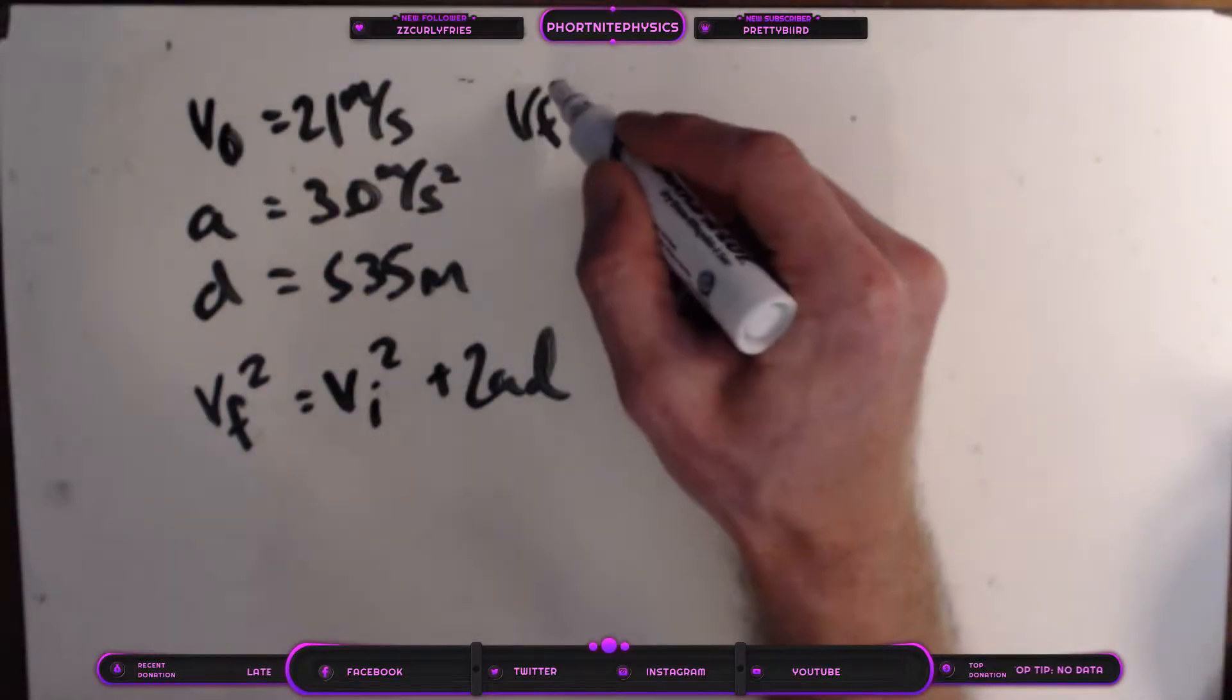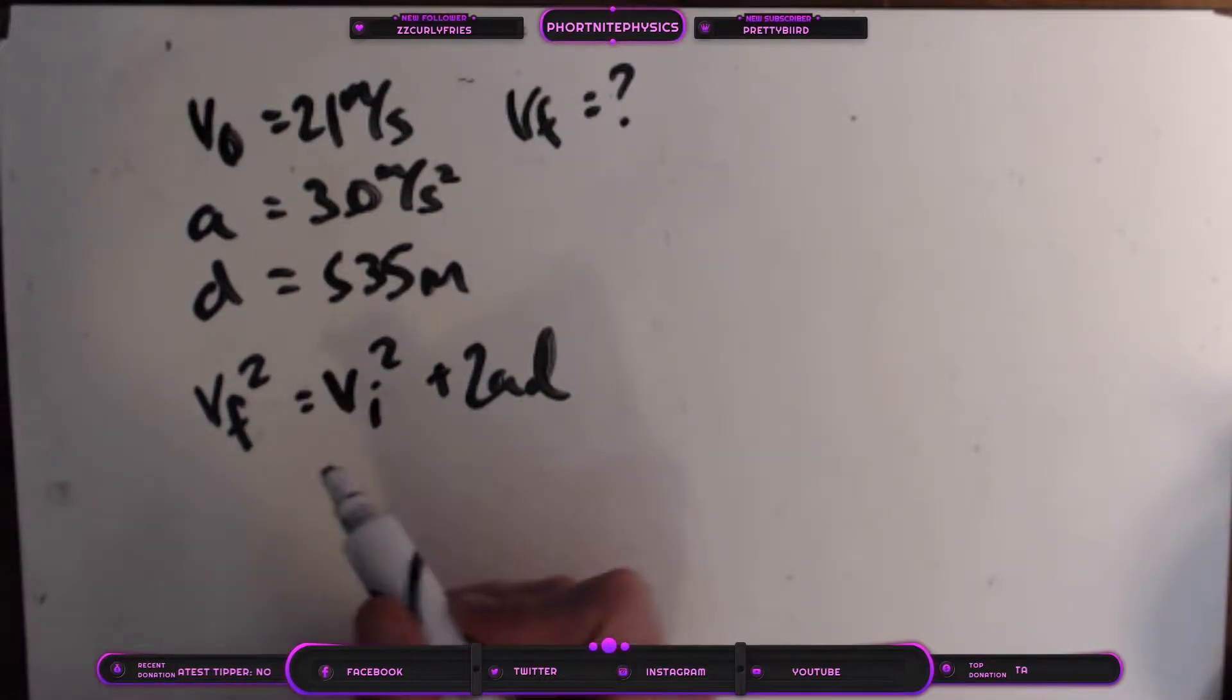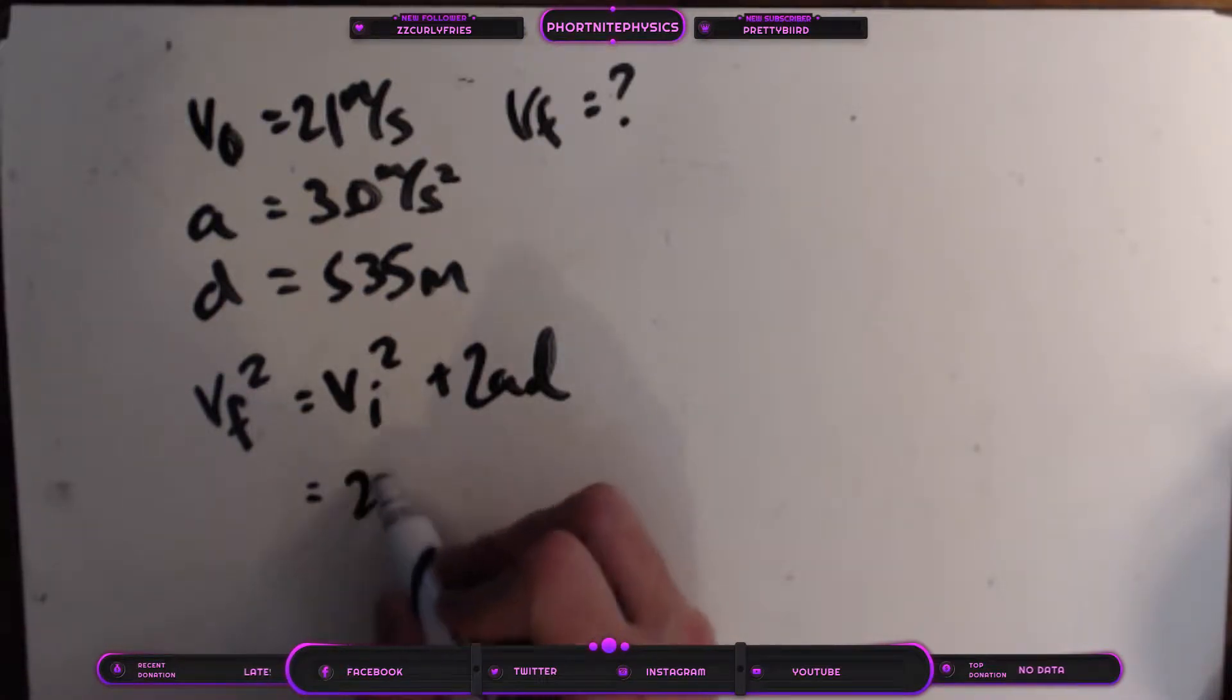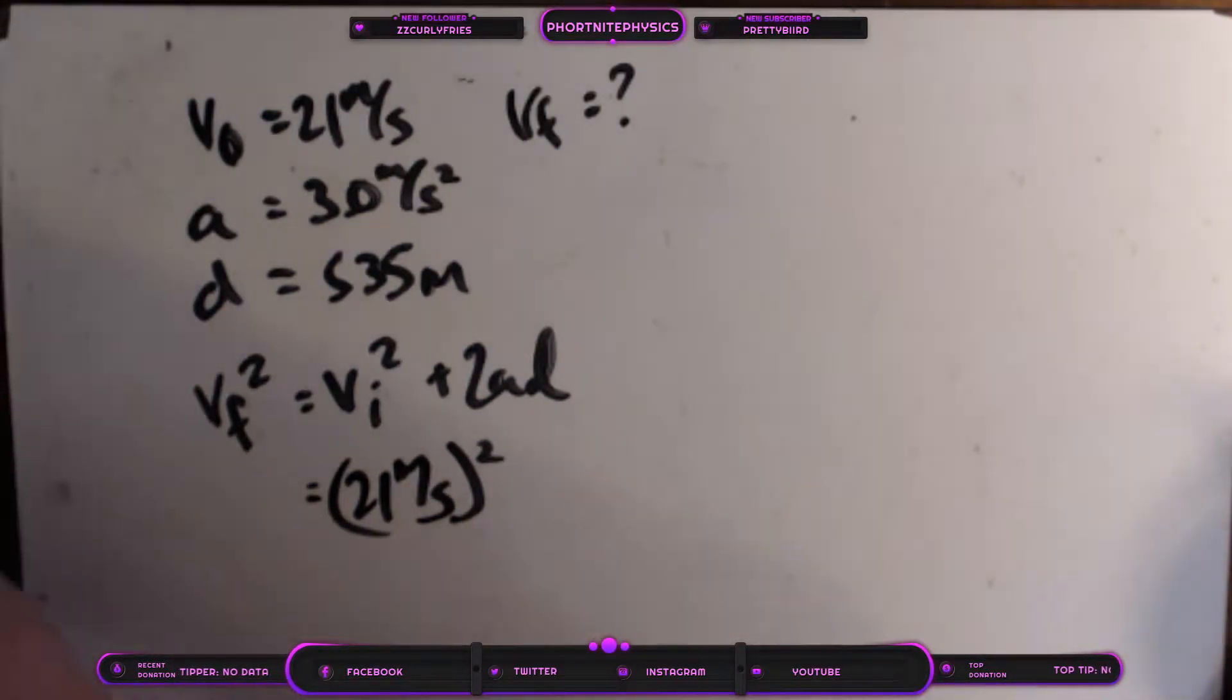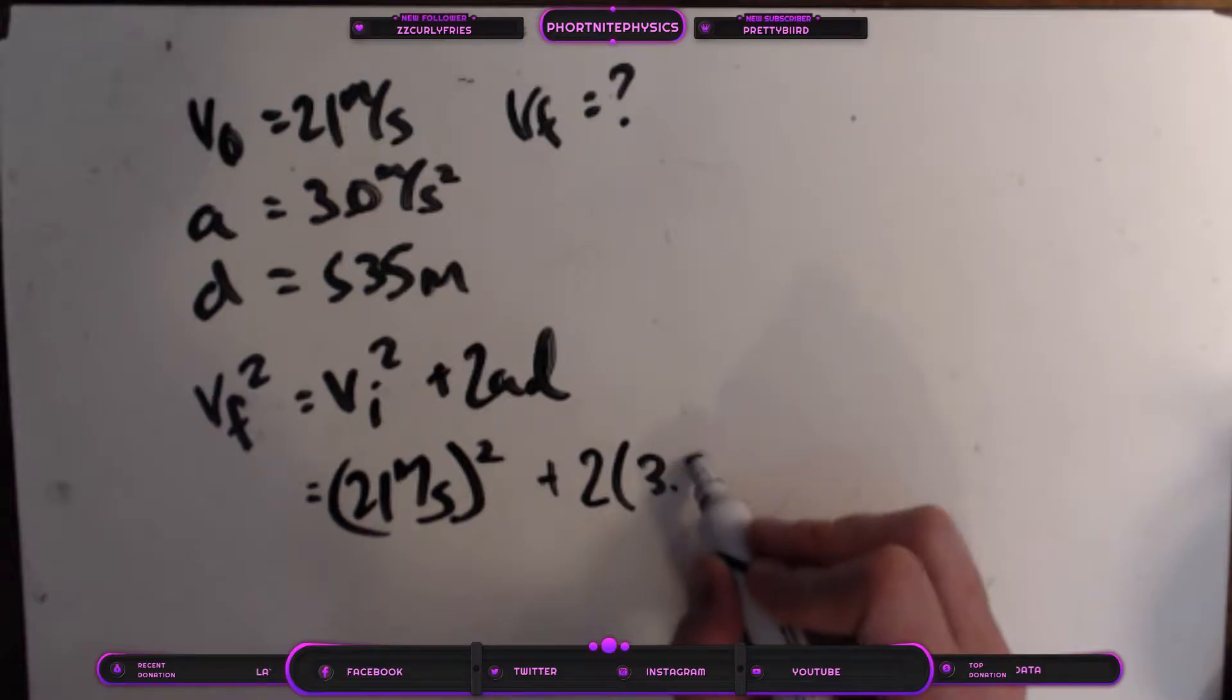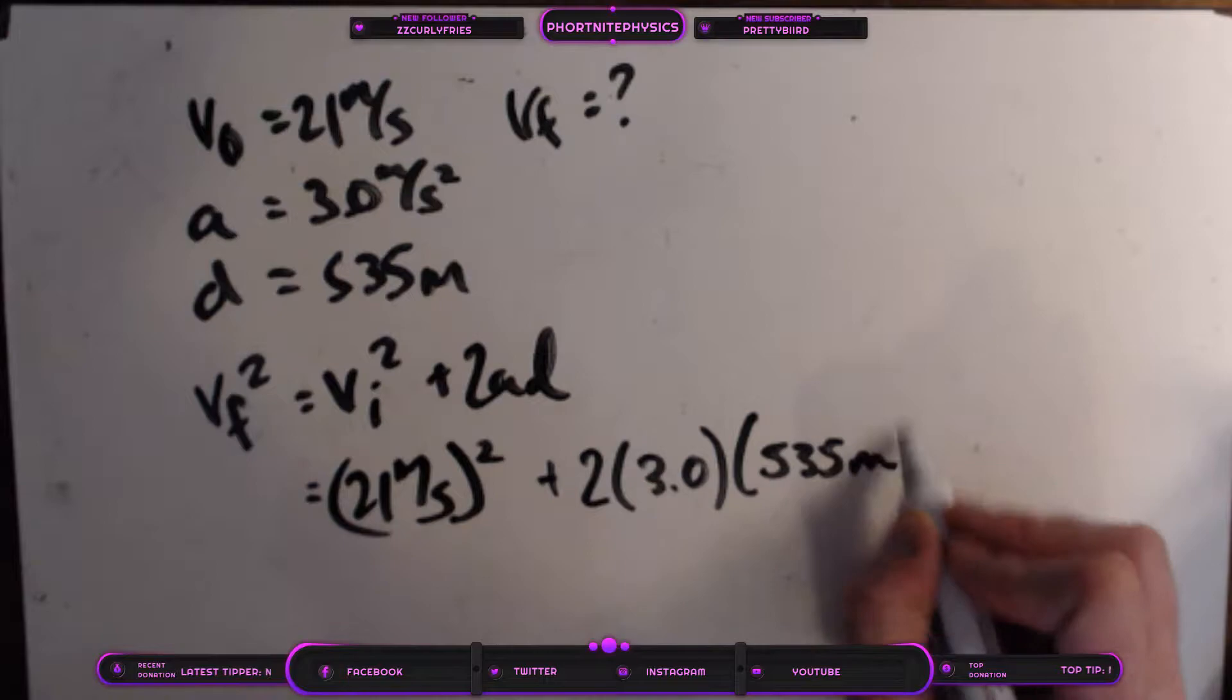We're looking for our final velocity. And so what we have is, let's see, we need to be down to only one unknown in our equation before we can solve it. So let's plug in everything we have and see if that gives us a chance. So we have 21 meters per second and we square it, okay, sorry, okay, we square it plus 2 times our acceleration and our distance, 535 meters, okay?